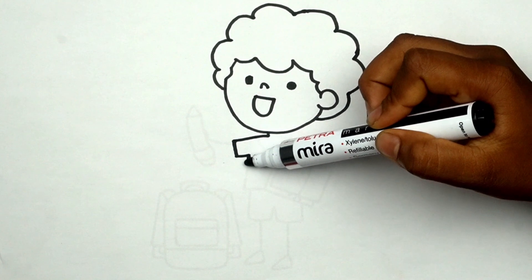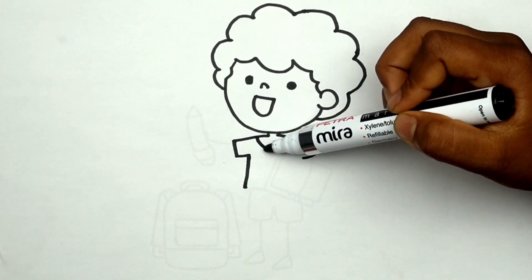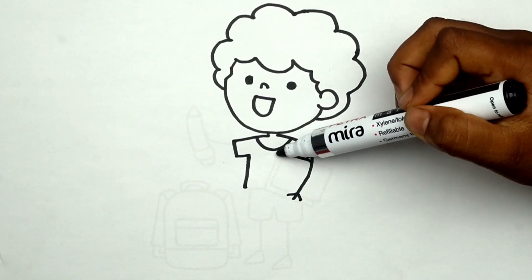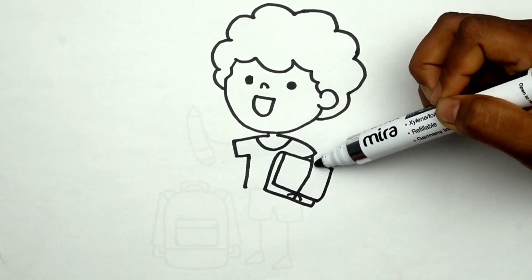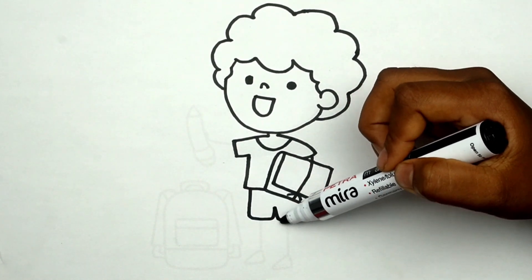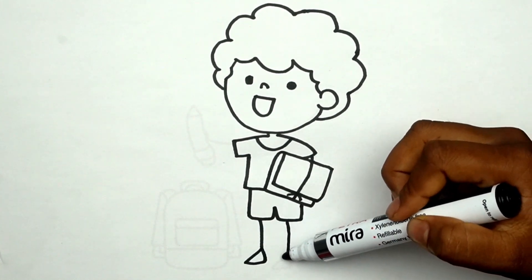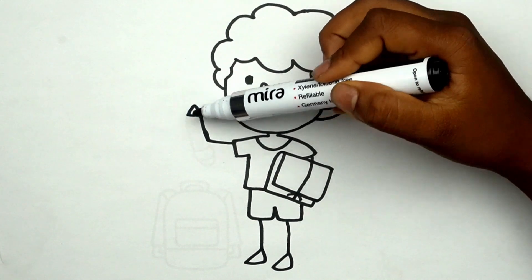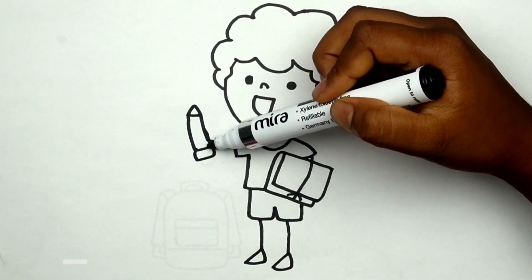A, B, C, D, E, F, G, H, I, J, K, L, M, N, O, P, Q, R, S, T, U, V, W, X, Y, and Z. Now I know my ABCs, next time won't you sing with me?